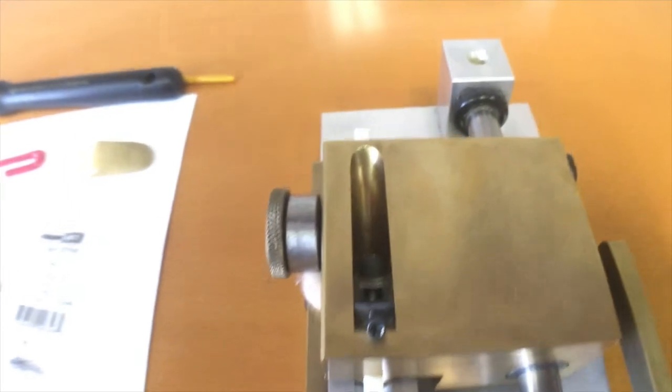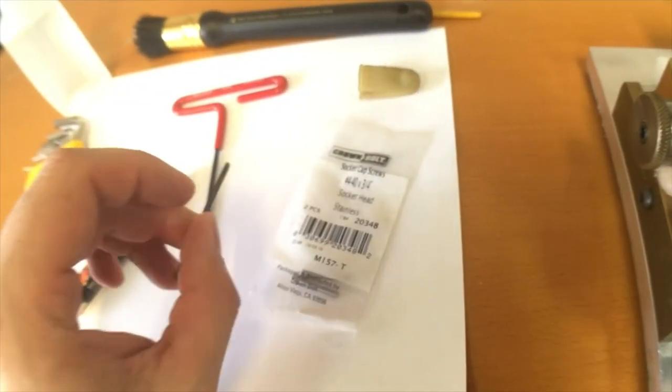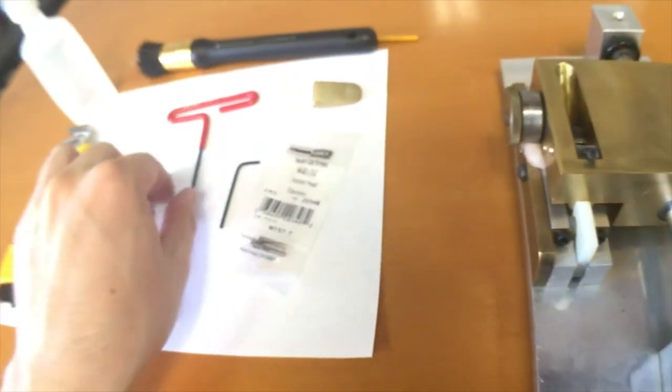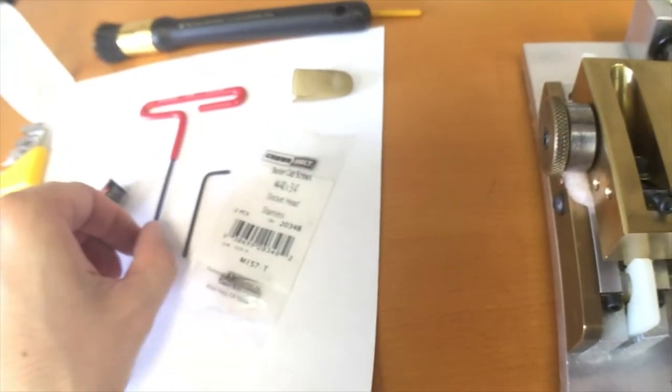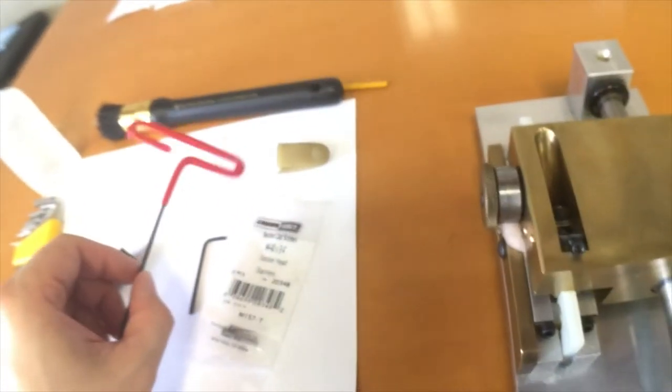I was just doing some research because there is hex keys and there's Allen keys. Allen keys are the numbers like two, two and a half, three, four. Hex keys are more of the screw sizes, three thirty-seconds, one sixteenth, that sort of thing.